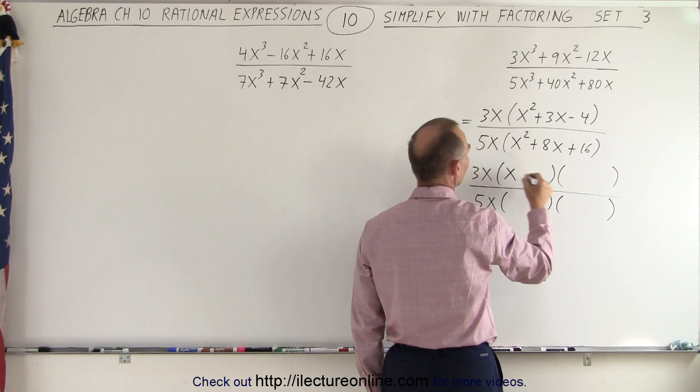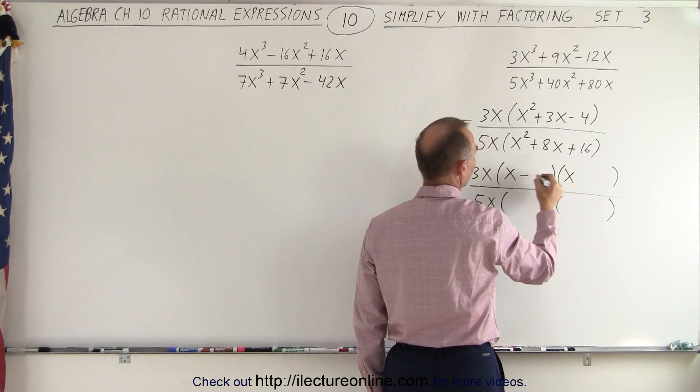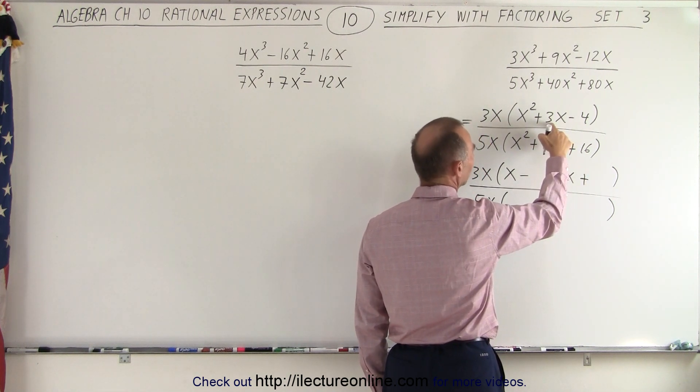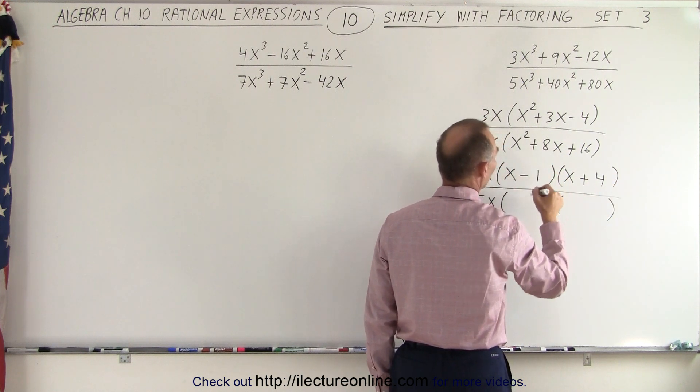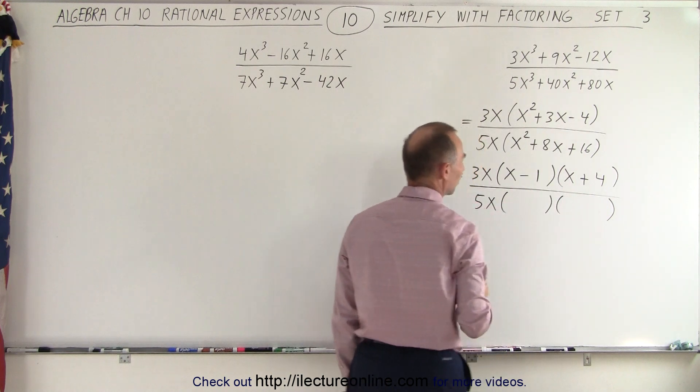Here we start with an x and an x. With the signs, one must be negative and one must be positive, and the positive one must be 3 bigger than the negative one, so how about a plus 4 and a negative 1? When I multiply, I get a negative 4. When I add, I get a positive 3.